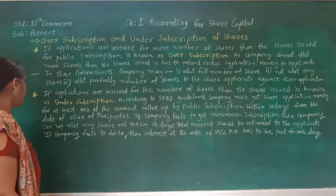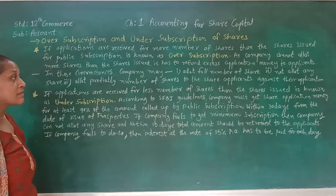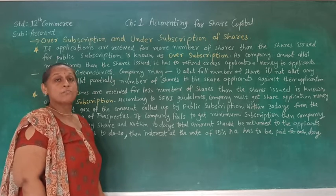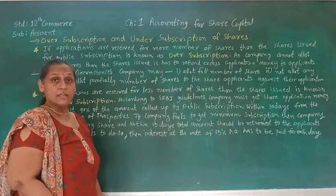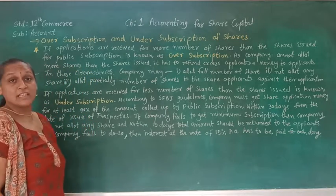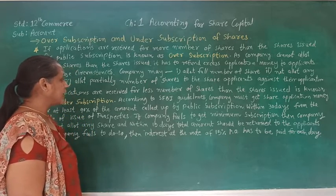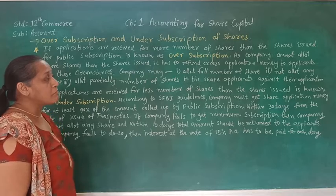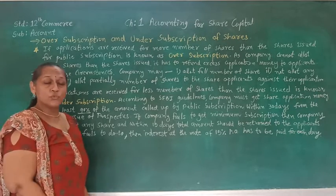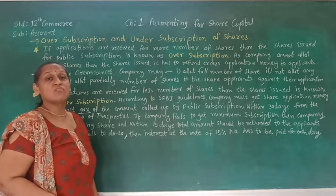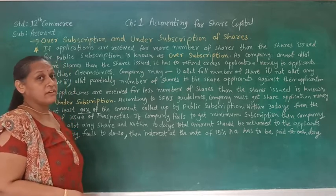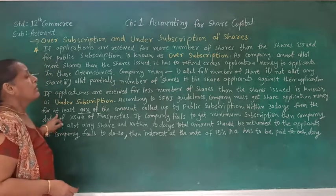The other situation is under subscription. Under subscription means if applications are received for less number of shares than the shares issued, that is known as under subscription. So if a company has issued a certain number of shares and the applications received are for less than that number, that is called under subscription. In that situation, SEBI gives guidelines to the company. According to SEBI's guideline, the company must receive share application money of at least 90% of the issue. So if the money received is less than 90% of the issue amount, the company has to refund all the money.